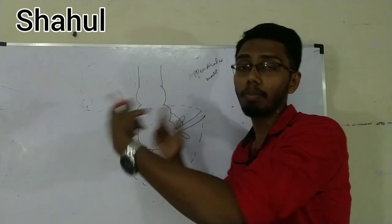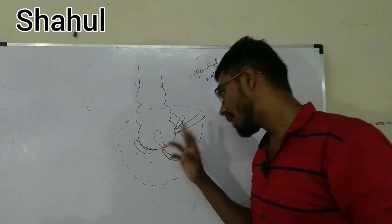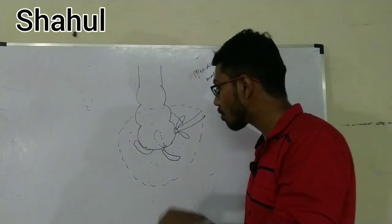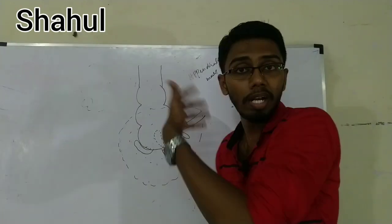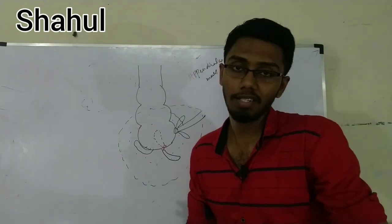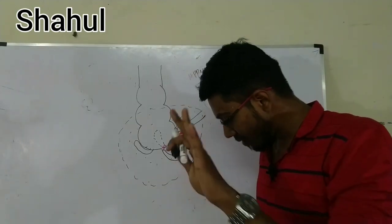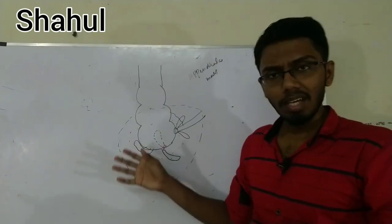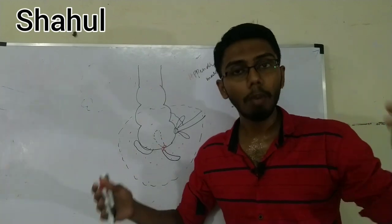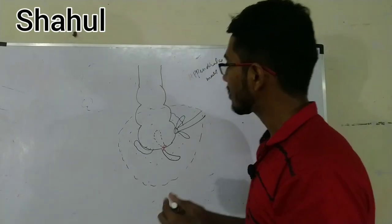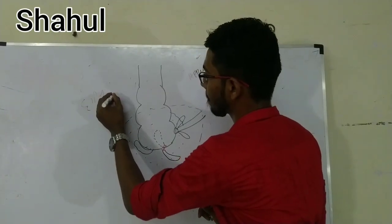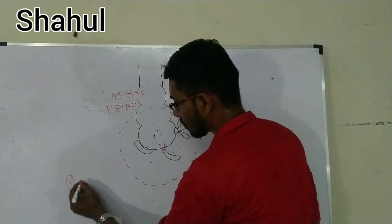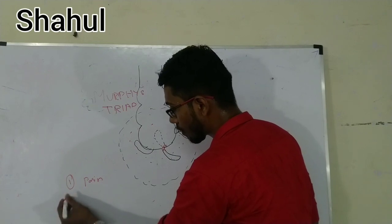If the appendicular mass is left without antibiotics, it can progress to an appendicular abscess. Another complication of acute appendicitis is perforation — when the appendix perforates, all infected material leaks into the peritoneal cavity, causing diffuse peritonitis. That is why acute appendicitis is a surgical emergency.